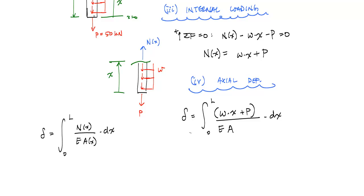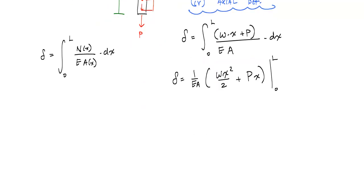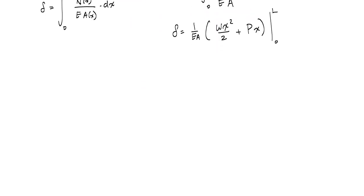And now I just got to work out some math and integrate this right here. I can extract this or pull this out, this ea out. And so I'll get delta is 1 over ea times the integral of this wx plus p, which is wx squared over 2 plus px. And I know I'm going to evaluate this from 0 to l. Again, if I evaluate this now, now this is all just some basic math here.